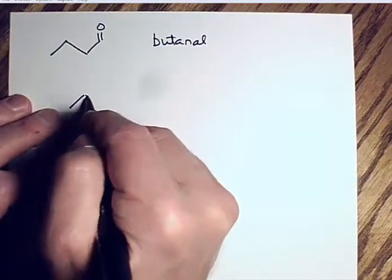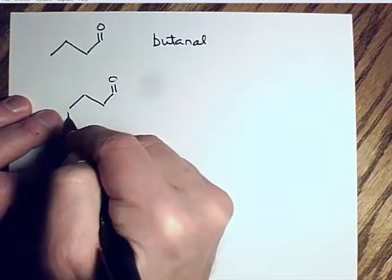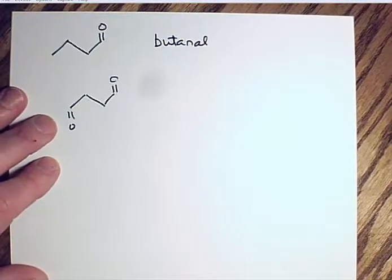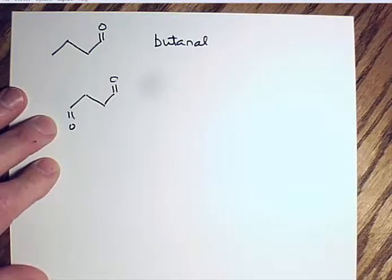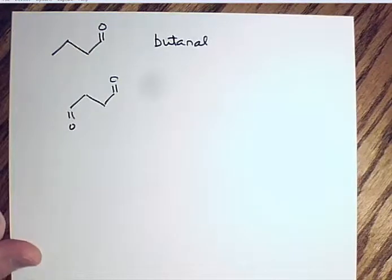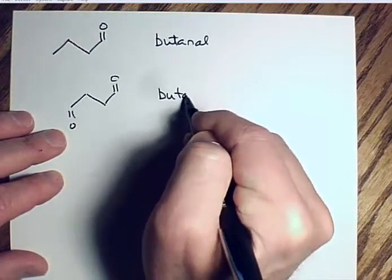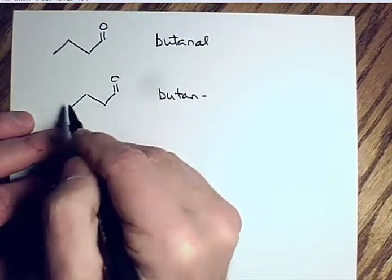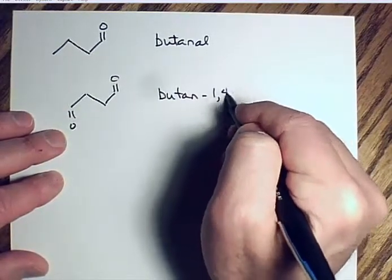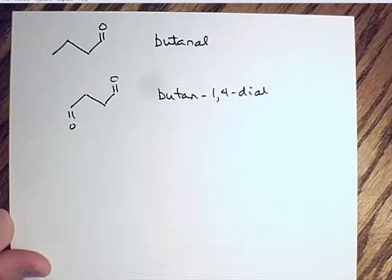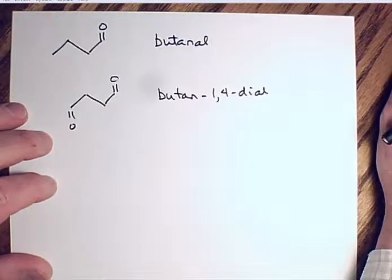If you have two aldehyde groups, you must number them. With a four-carbon chain, the aldehydes would be on carbons one and four. The convention is to number when you have more than one. So this would be 'butane-1,4-dial.'